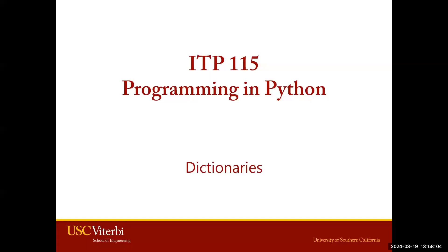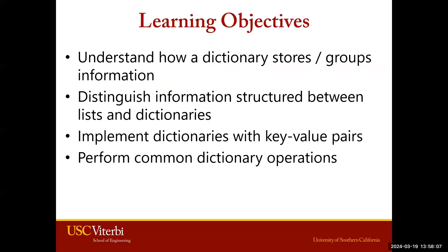Hello. Today we're introducing a new type of variable: dictionaries. Our video will cover four learning objectives. First, we'll want to understand how dictionaries store and group information. Second, we want to understand how this structure differs from lists. Third, we'll want to know how to implement dictionaries with key-value pairs. And fourth, we want to perform common dictionary operations.